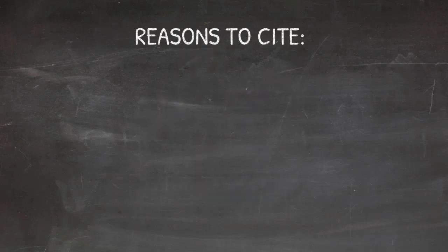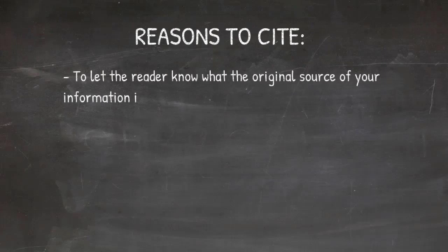Now, there's all these different reasons to cite, and we've talked about these just briefly a moment ago. Letting your reader know what the original source of your information is, that's a really helpful one. And that's part of the reason why there are these very particular rules for how citations are done, because it helps to eliminate confusion between different types of information that might be out there.